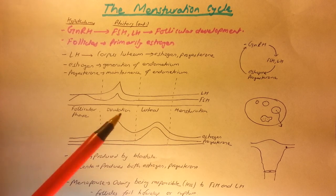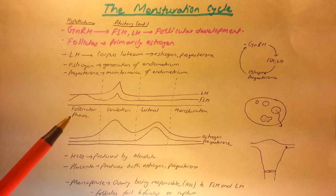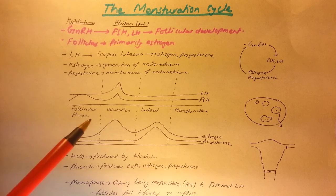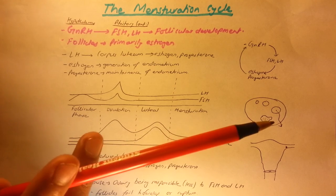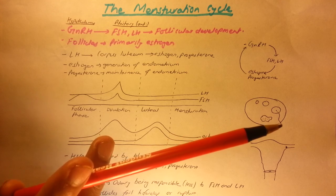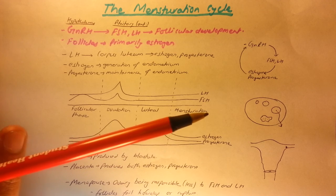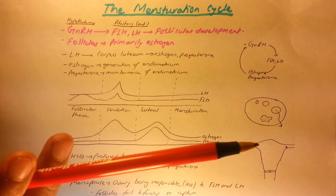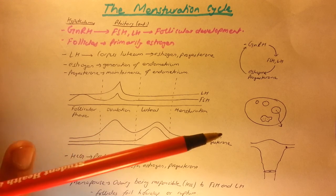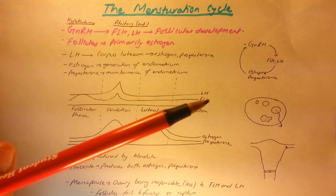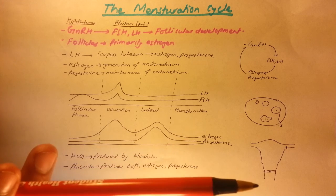Now let's look at the graph showing the actual menstruation cycle. The menstruation cycle is divided into four different phases: the follicular phase, where follicles are developing; ovulation, where the follicle is fully developed and the egg comes out; the luteal phase, where the corpus luteum is active; and finally menstruation, where the endometrium breaks and falls out. Two graphs show the changes in luteinizing hormone, follicle-stimulating hormone, and estrogen and progesterone throughout the cycle.